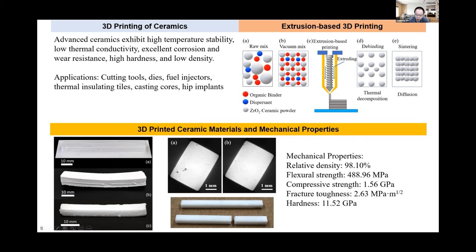You can see the progression from the green part, to the as-printed sample, to the dried sample, and finally the sintered zirconia sample. Comparing the scale bars, we observe quite large shrinkage after drying and after sintering. The highest temperature in the sintering process is 1700 degrees C, which explains the large shrinkage observed.